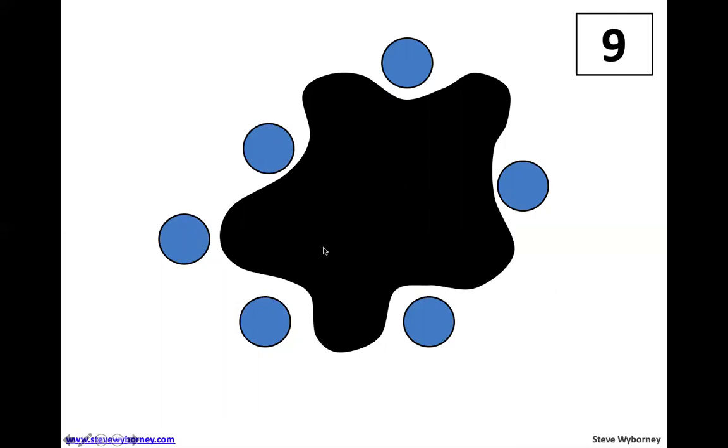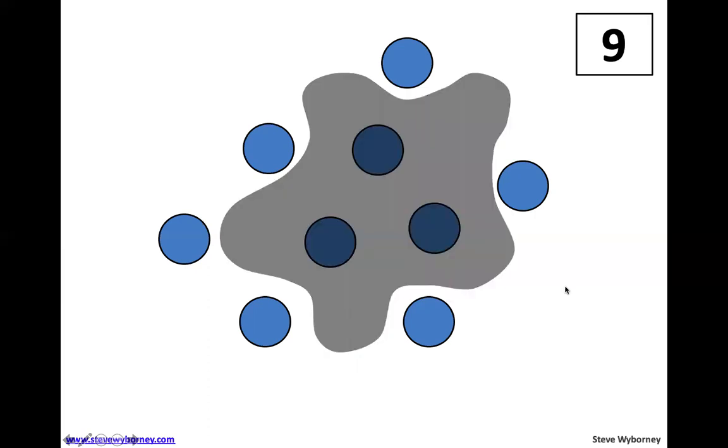How many dots are under this splat? Okay. If you have an answer, go ahead and tell somebody in your room. How many dots are under there? How many dots are out? I know there's one, two, three, four, five, six. So if there's six dots outside of the splat, how many are under the splat? Did you say three? Good job. Because nine minus three is six. Or nine minus six is three. Or six plus three is nine.